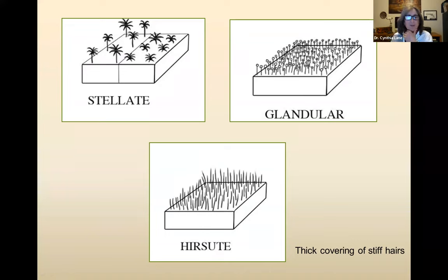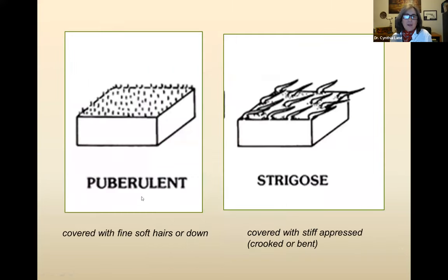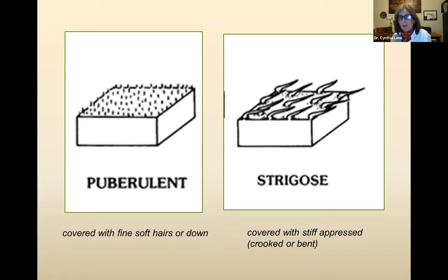Another kind of hair more similar to what you typically think of as a hair is hirsute, meaning a thick covering of stiff hairs. That's compared with pubescent, which is more of a soft, fine, downy hair. Another type is strigose, which means covered with stiff appressed hairs that are kind of crooked or bent. Throughout this talk I don't imagine you'll remember all of these, but just know that there are these different types of hairs, and when you're keying a plant out and it says 'pubescent hairs' or 'strigose hairs,' that's when you go to one of the references to look it up.